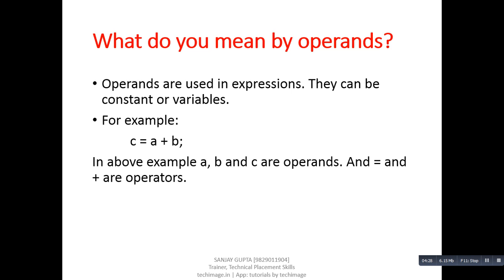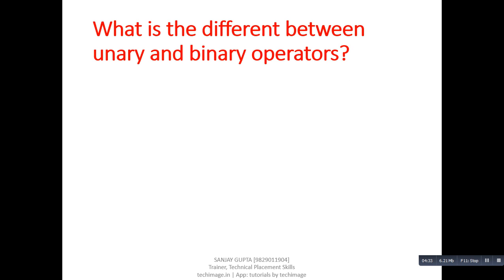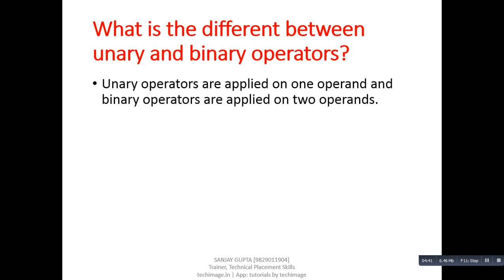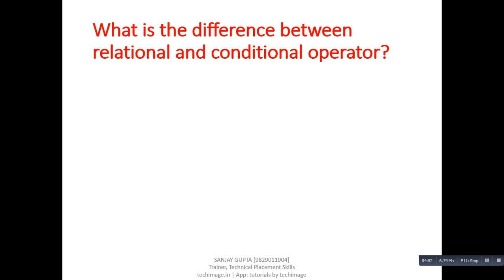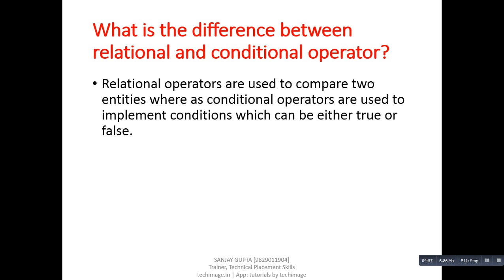Next question: what is the difference between unary and binary operators? Unary operators are applied on one operand, while binary operators are applied on two operands. Next question: what is the difference between relational and conditional operators? Relational operators are used to compare two entities, whereas conditional operators are used to implement conditions which can be either true or false.